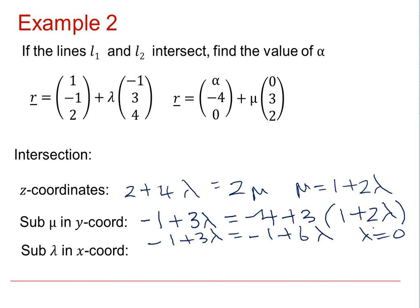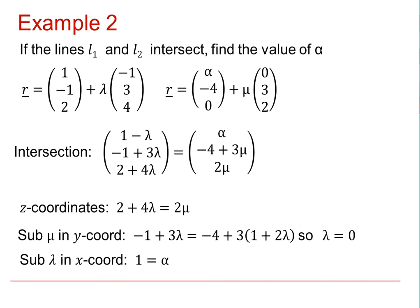As this gives us that minus 1 plus 3 lambda equals minus 1 plus 6 lambda, the solution is lambda equals 0. Using this substitution lambda equals 0 in the x coordinate, we'll see that 1 equals alpha. You may wish to pause the video here and carefully check this working.